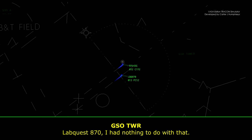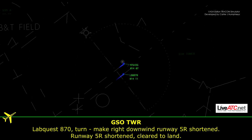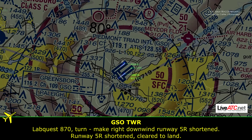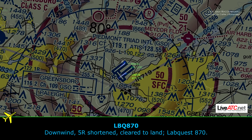LabQuest 870, I had nothing to do with that. I saw it coming. Can I just make a right to 270? LabQuest 870, turn right, make right downwind, runway 5 right short. Runway 5 right short, Kilo-1. Downwind, 5 right short, Kilo-1, LabQuest 870.